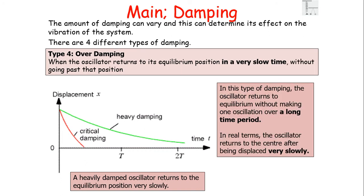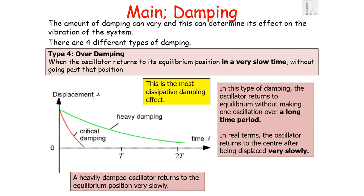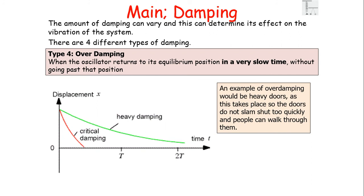The fourth type of dampening is over-dampening: when the oscillator returns to its equilibrium position very slowly without going past it. Like critical dampening, it doesn't complete a full oscillation — only half an oscillation — but it occurs over a much longer time period, returning to equilibrium very slowly. This is probably the most dissipated dampening effect and can be considered an extreme version of critical dampening. An example in the real world is heavy doors — the door closes slowly without slamming and without swinging backwards and forwards.